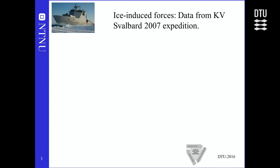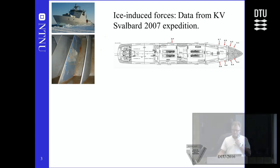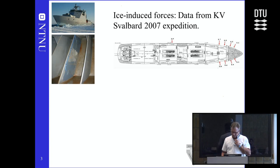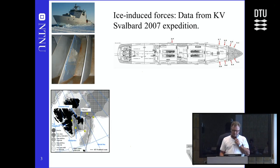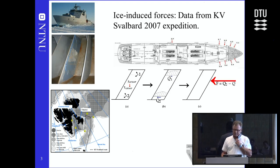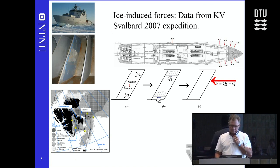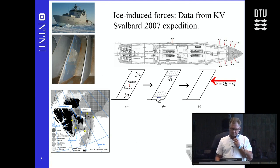The data behind this study was from an expedition with the coast guard vessel Svalbard in 2007. Fiber optic sensors are mounted on the internal frames — there are five frames in the bow area which are instrumented, and one frame in the midship. Most of the ice peak loads will occur in the bow area. The measurements are used to estimate the load based on shear deformation, and from estimation of shear forces you can estimate the external load, giving a local line load between two frames.